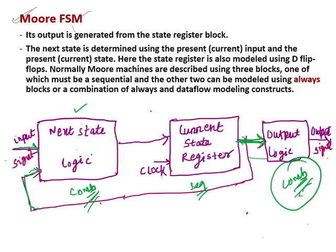This register is modeled using D flip-flops. Normally Moore machines are described using three blocks — one of which must be sequential, and the other two are combinational blocks modeled using always blocks or a combination of always and data flow modeling constructs. I will give a code example for this.